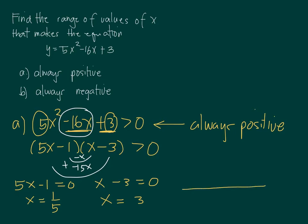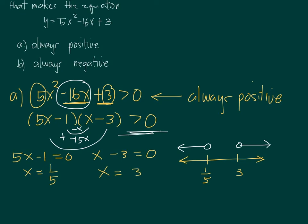When we place these numbers in the number line, we arrange them properly, so 3 on the right, and 1 fifth on the left. Since we're looking for greater than 0, we have to consider the numbers before the first and the numbers after the second. That means the answer to this inequality is that x should be less than negative 1 fifth, and x should be greater than 3. These values of x will always make 5x squared minus 16x plus 3 always positive.